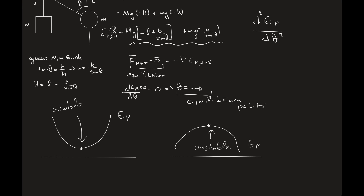If you found a single equilibrium point, once you have your second derivative, take the equilibrium value and plug it in. The sign of the second derivative — whether it is positive or negative — will tell you whether you have stable or unstable equilibrium. If you have more than one equilibrium point, you have to do this for all of them. You have to determine the stability for all equilibrium points, whether each is stable or unstable.